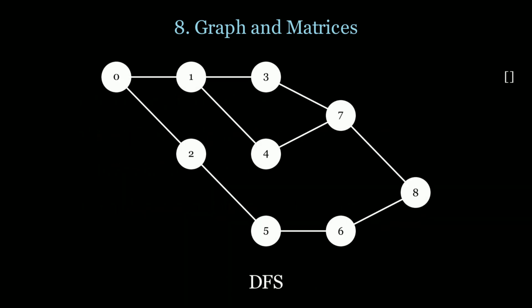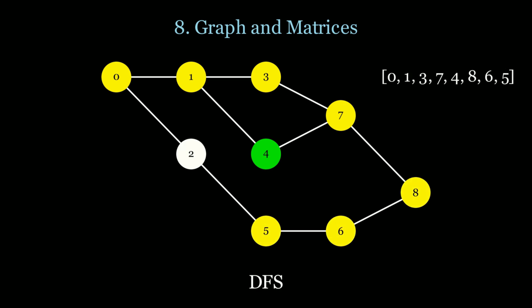In DFS we scan the maximum path first and visit all nodes as we go. That's going to be 0, 1, 3, 7, 4, 8, 6, 5, and 2. We mark all nodes as visited and return from the recursion call.